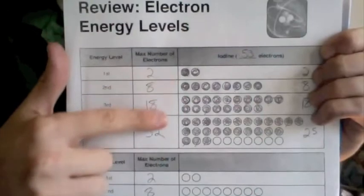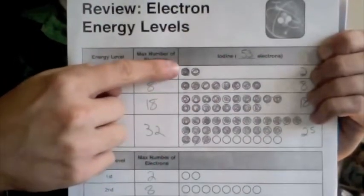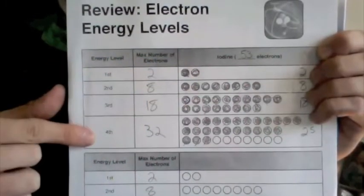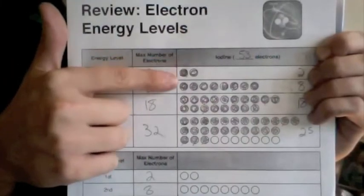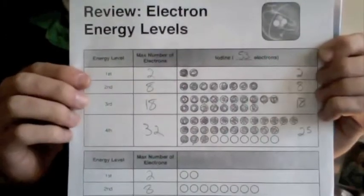Basically you can use this chart to help you arrange them. You just fill in these bubbles one at a time starting at the first level, then the second, then the third, then the fourth, and you just count to 53. So if you look these are all shaded in to represent each of the 53 electrons that iodine has.